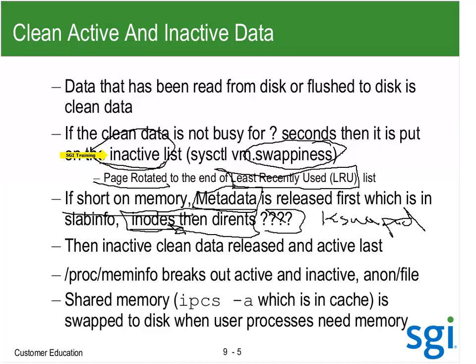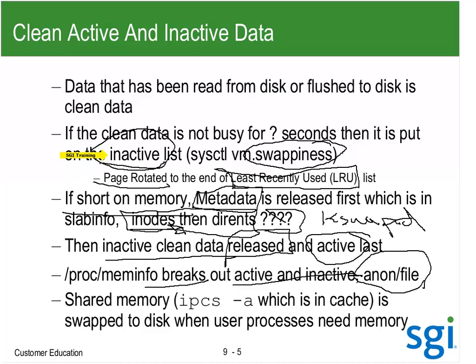The inactive cache is what is released first, and then the active is released. If it's a process, the active is swapped. meminfo breaks out the active and inactive between anon and file. When we looked at yours, we saw almost four terabyte of inactive file page cache, and most of the anon was active.